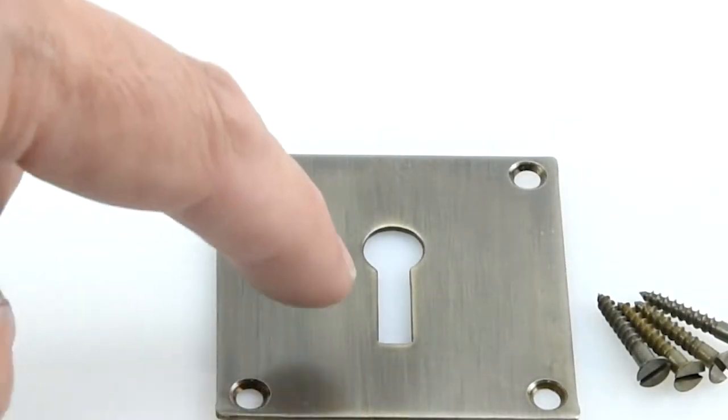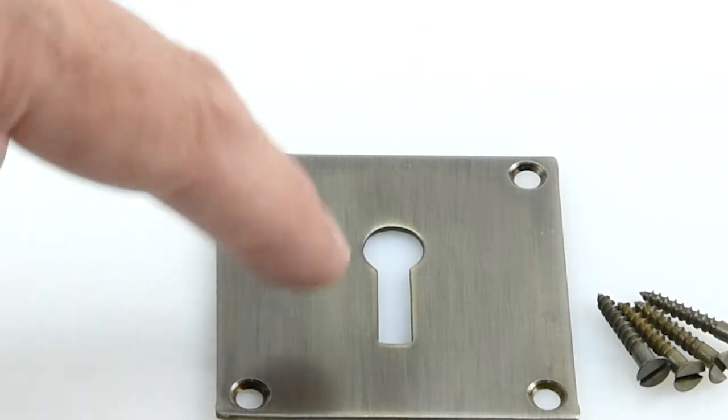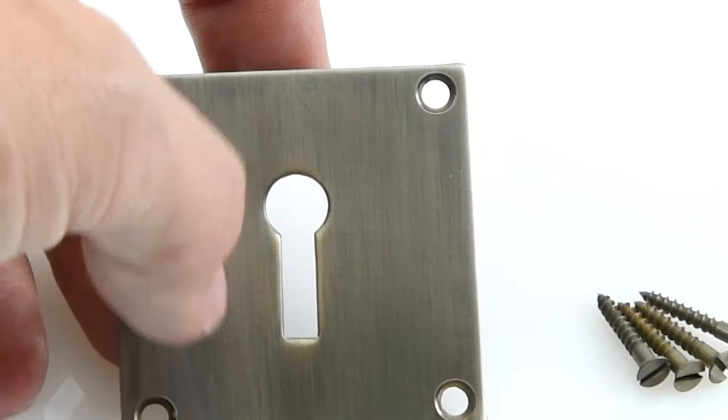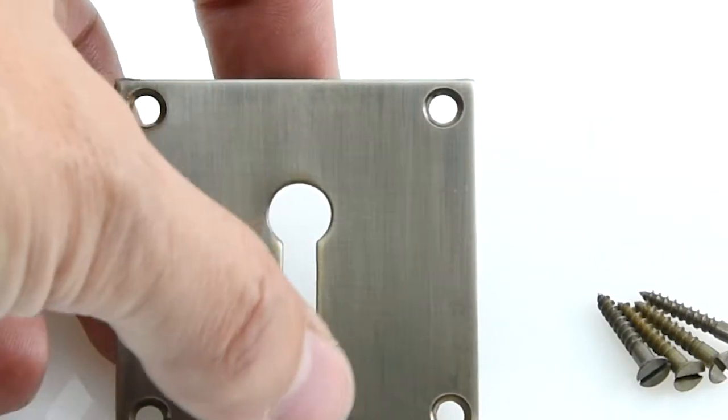They do this in the standard profile, which is just for a normal keyhole, but they also do it in a euro keyhole which is a bigger version, and the oval keyhole as well for an oval cylinder lock.